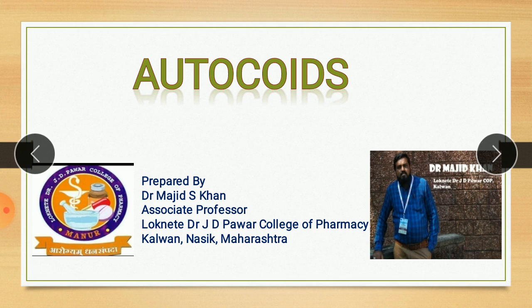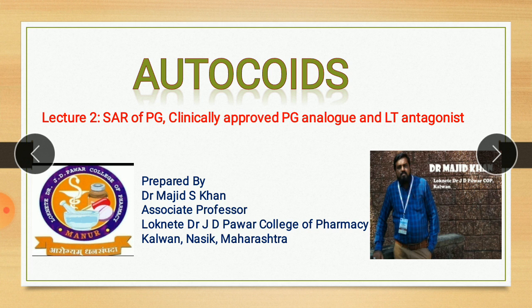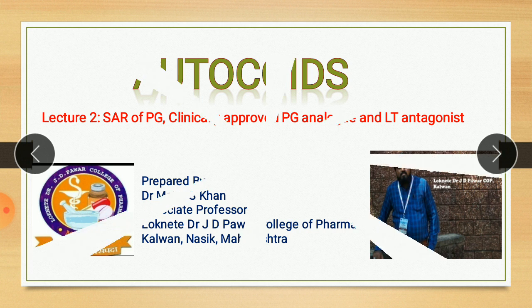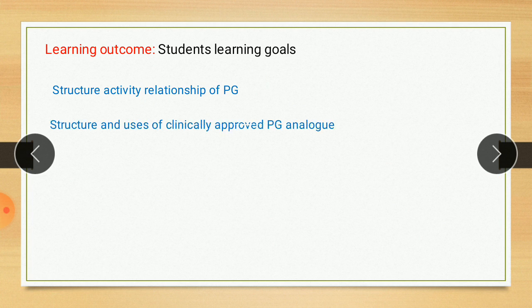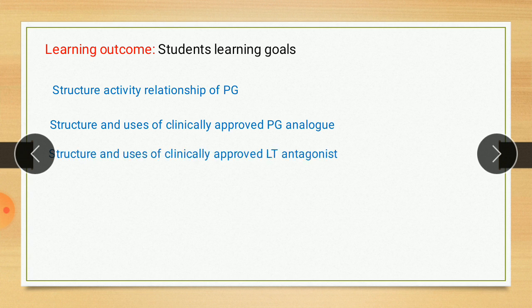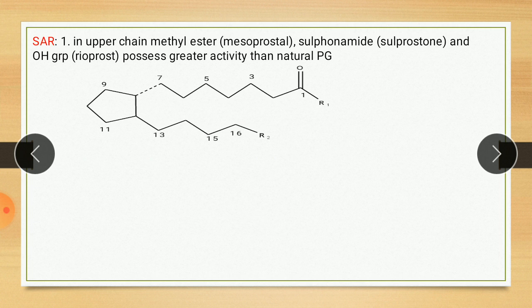I welcome all of you in this lecture 2, or video 2, of autocoids. In lecture 1, we covered the chemistry, nomenclature, and physiological action of prostaglandins. In this video, lecture 2, we will cover SAR of prostaglandin, clinically approved prostaglandin analogs, and leukotriene antagonists. The student learning outcomes are: students will be able to learn about the structural activity relationship of prostaglandin, and students will be able to draw the structure and remember the uses of clinically approved prostaglandin analogs.